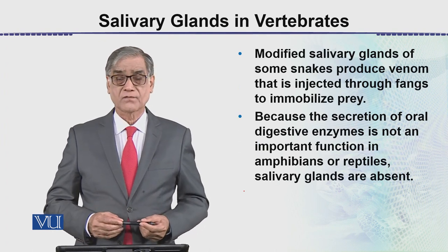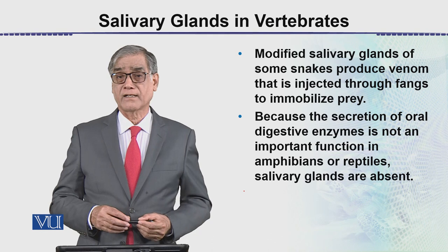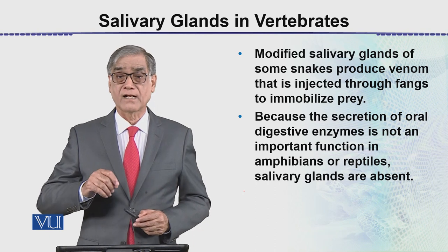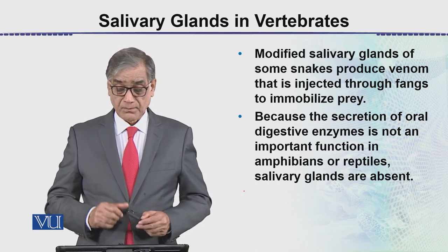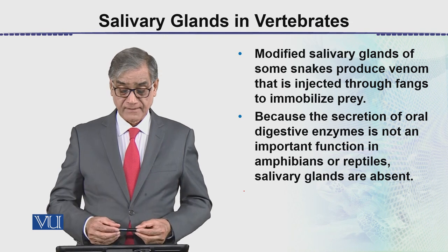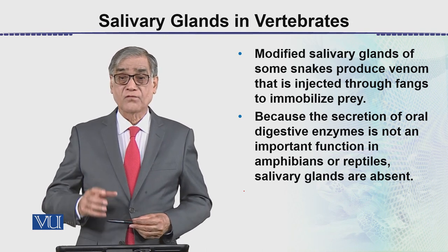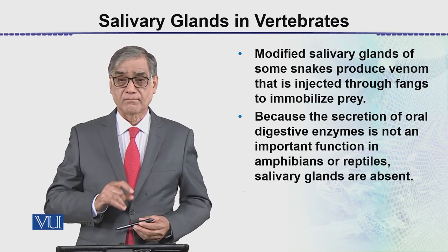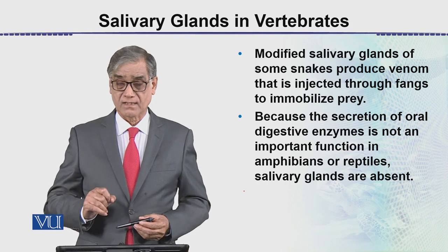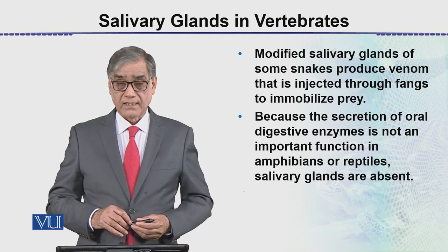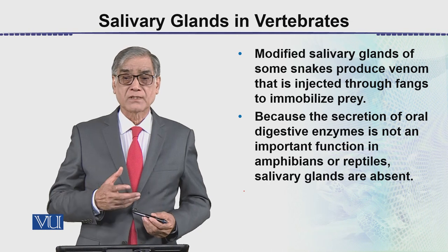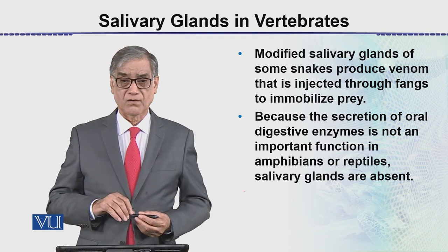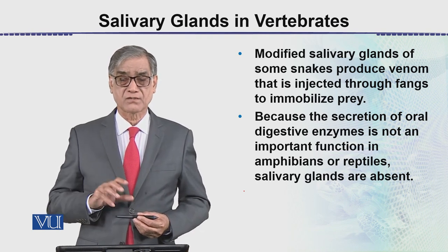There are also modified salivary glands in some snakes. In snakes, these become poison glands — they produce venom, which is injected through fangs. These are specialized teeth attached by means of a venom duct, because the snake needs to immobilize animal prey. The venom is injected first via these fangs.